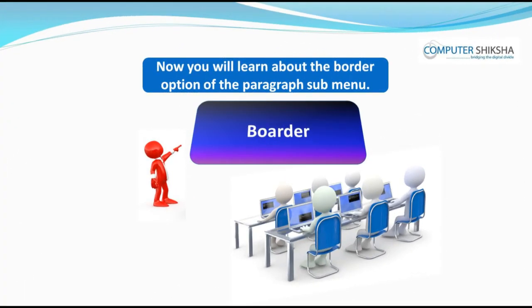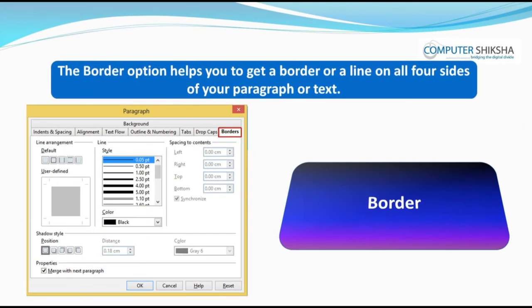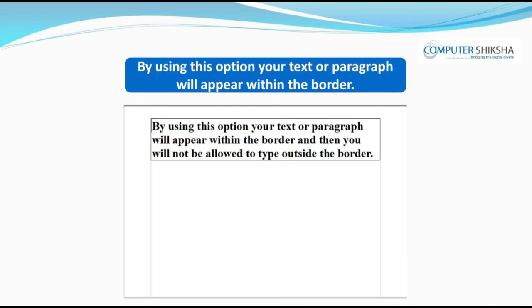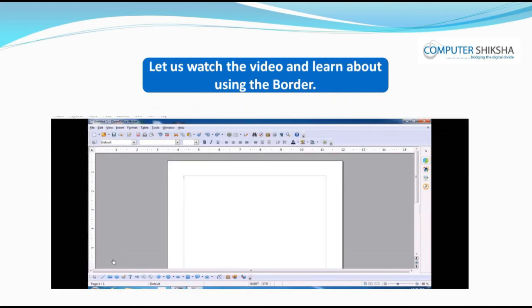Now you will learn about the border option of the paragraph submenu. Can you say why we use the border option? The border option helps you to get a border or a line on all four sides of your paragraph or text. By using this option, your text or paragraph will appear within the border. If you like, you can change the size or color of the border line. Let us watch the video and learn about using the border.